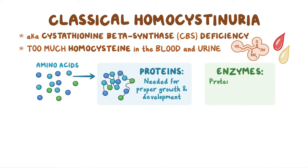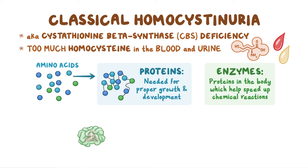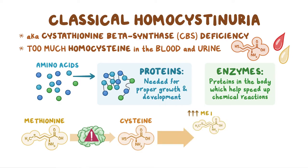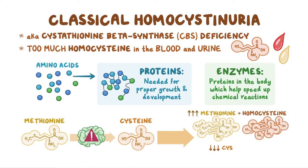Enzymes are a type of protein in the body which helps speed up chemical reactions. CBS deficiency usually occurs when there is a problem with one of the enzymes involved in converting the amino acid methionine into the amino acid cysteine, resulting in a buildup of methionine and homocysteine and decreased production of cysteine.